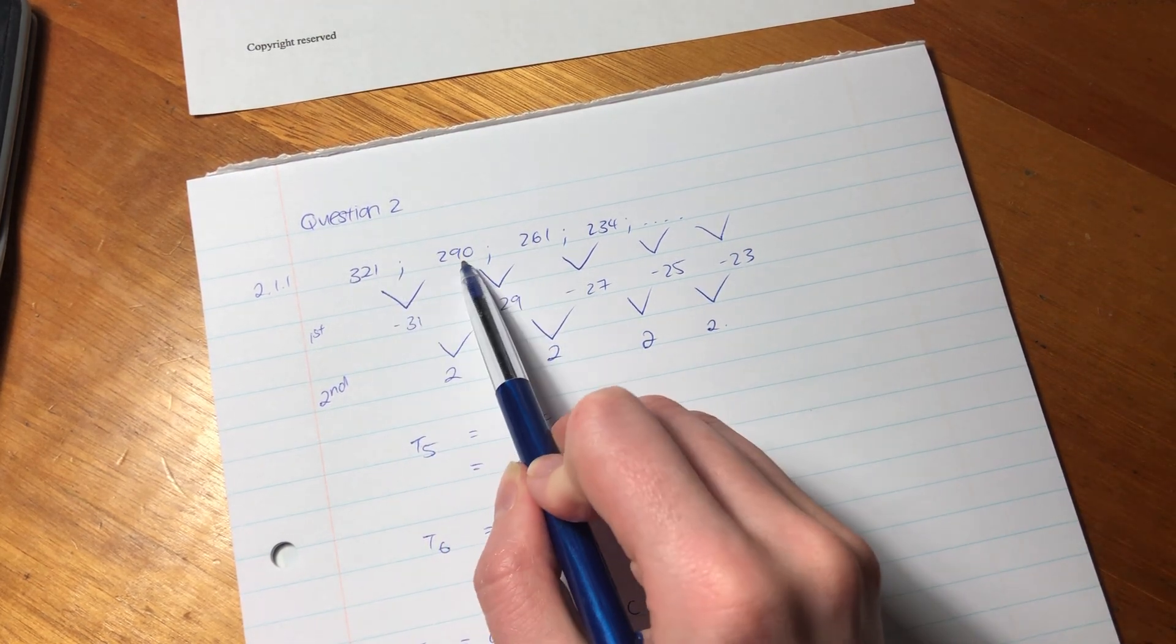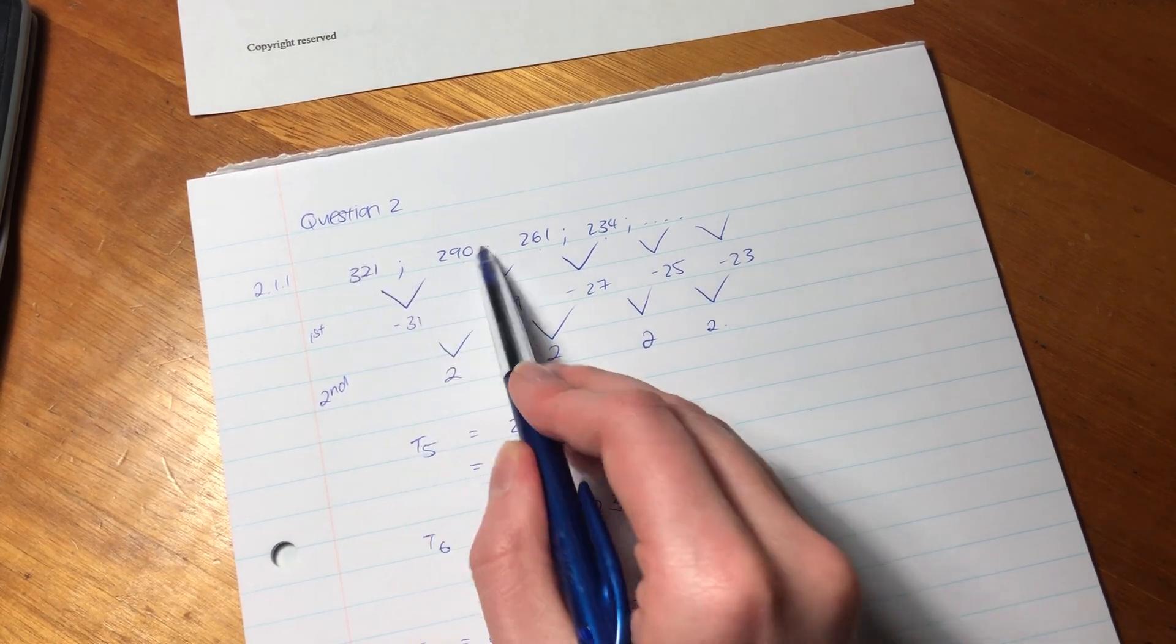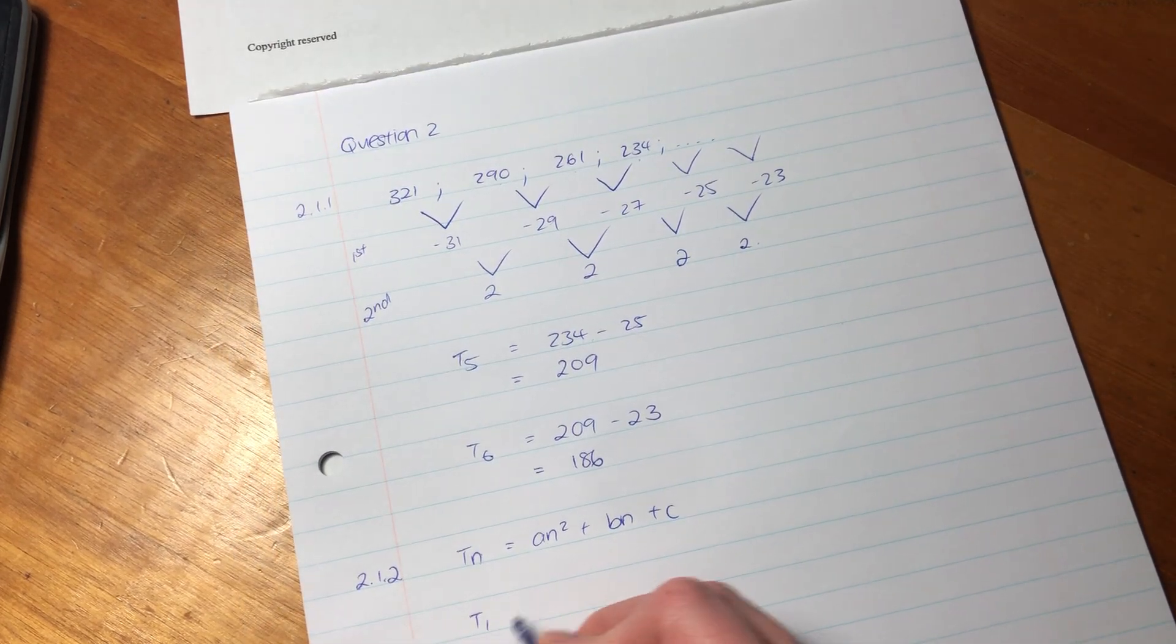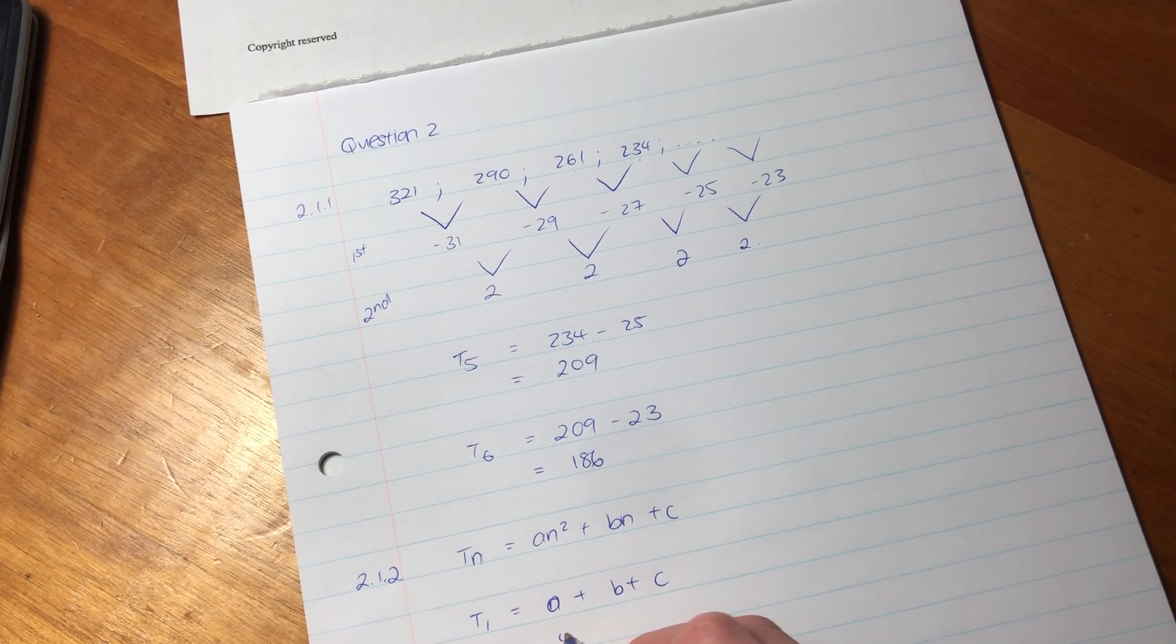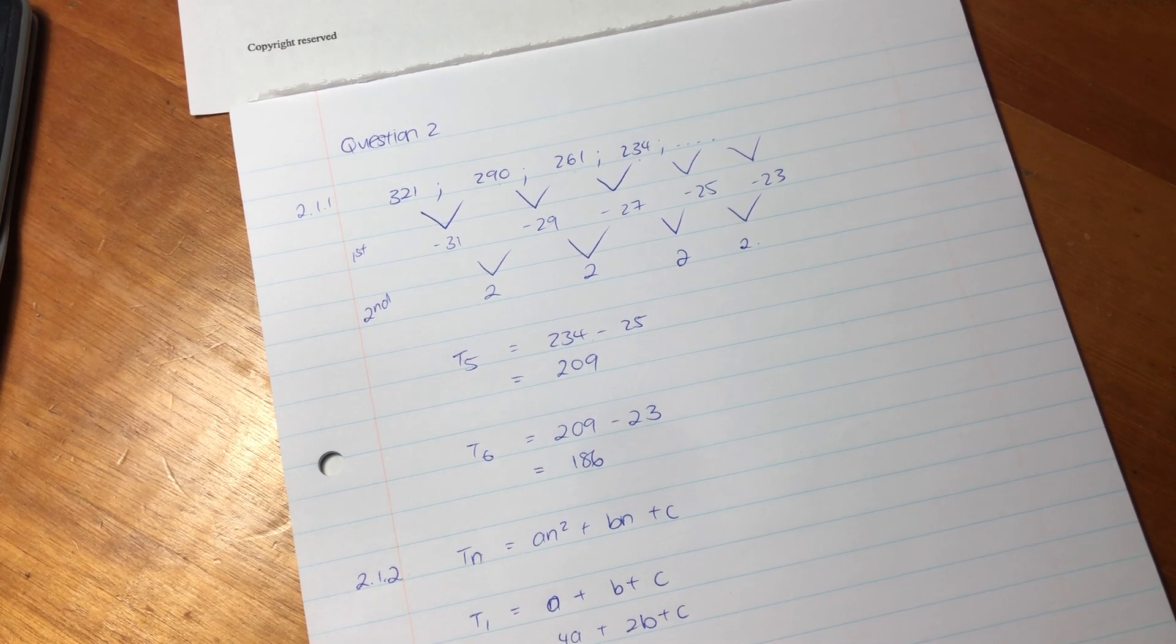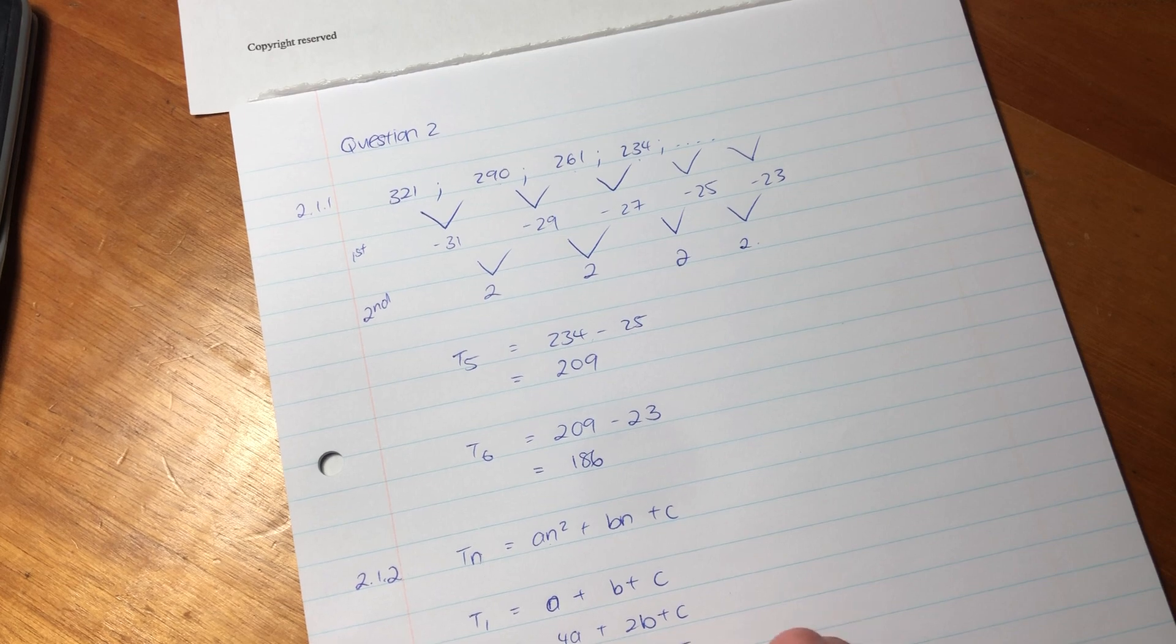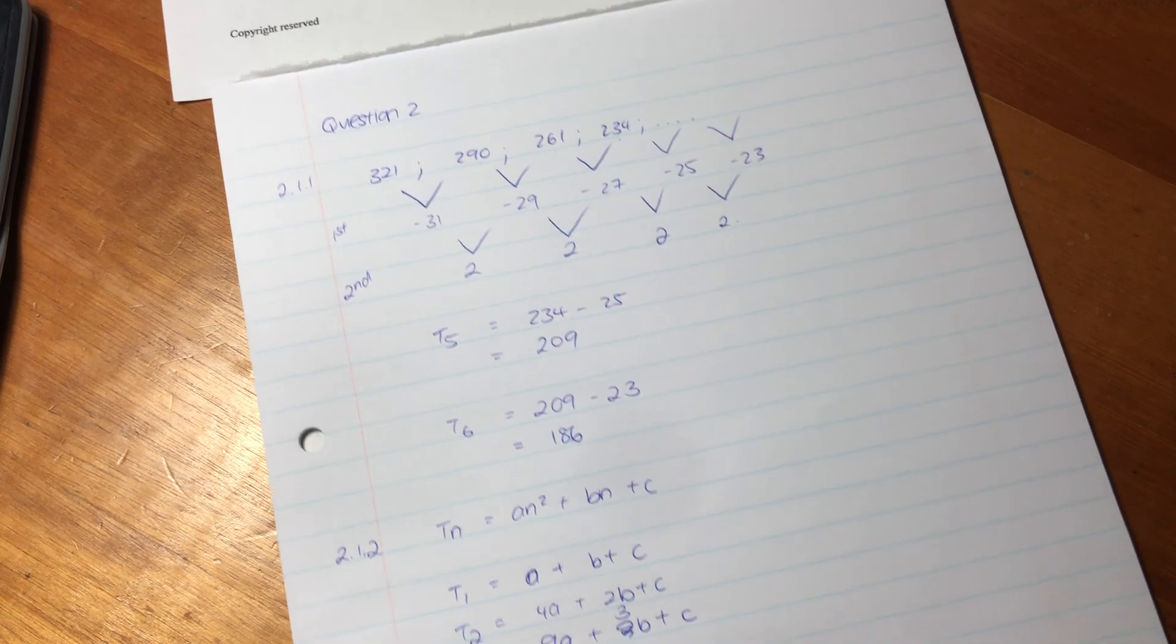N can be any term. So, over here, this is N equaling 1, N equaling 2, N equaling 3, N equaling 4. This N indicates the place of the term in the sequence. So we know that T1 is going to equal A plus B plus C. T2 is 4A plus 2B plus C. All I'm doing is I'm subbing in this value to wherever N is over there. So I basically wrote out the first three terms.